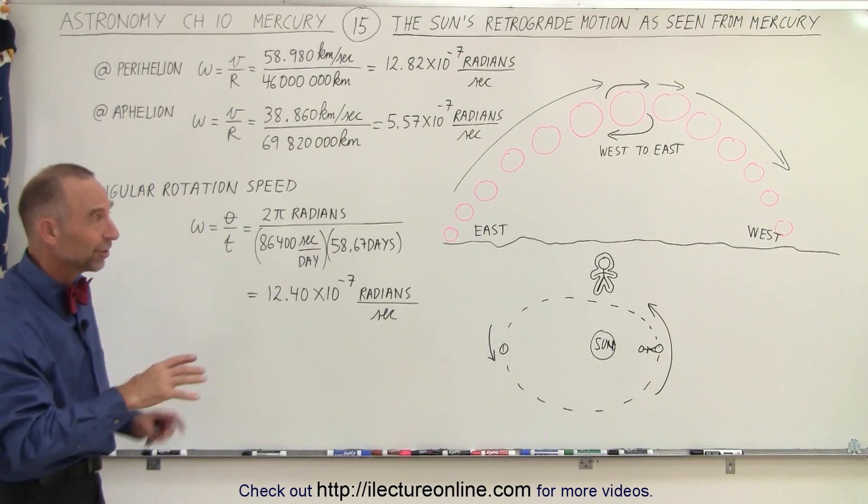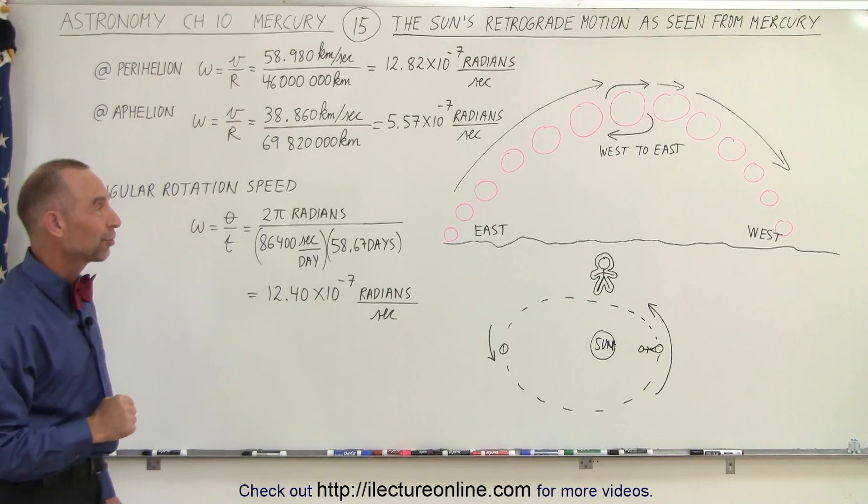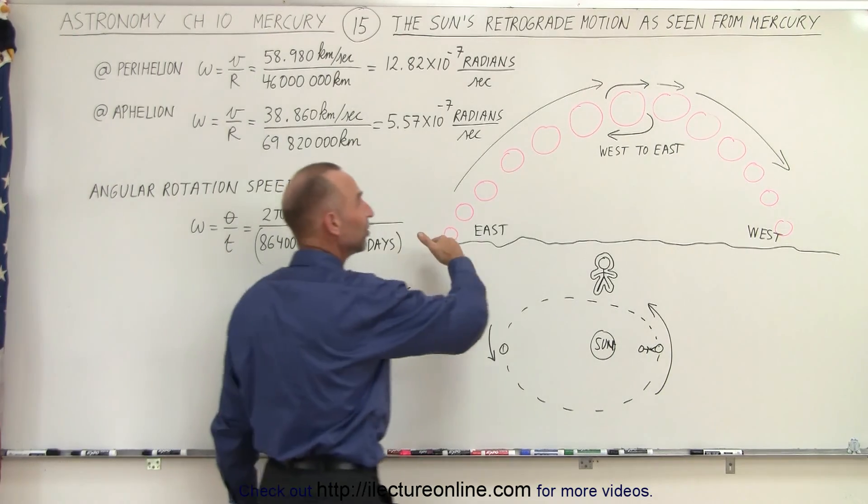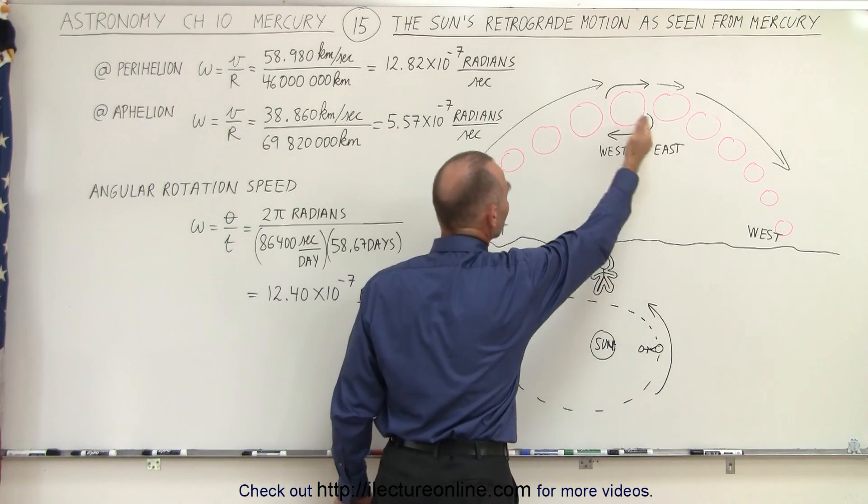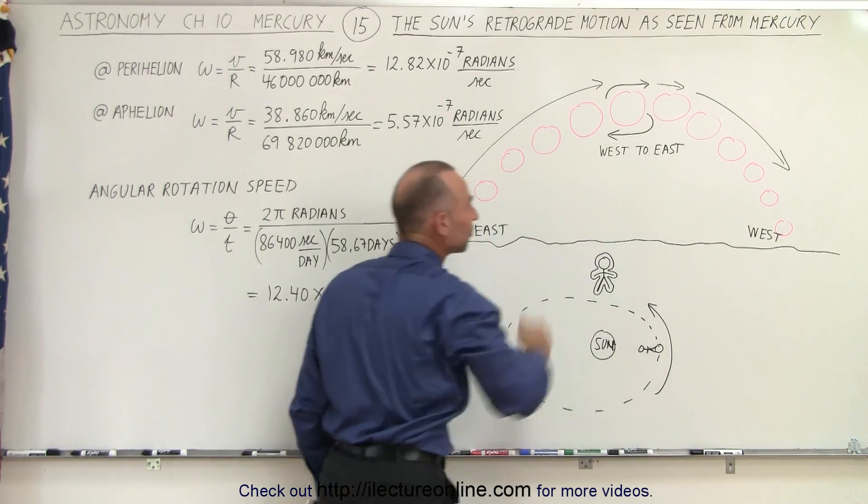You're going to see something different in the apparent motion of the Sun. But here where we see the Sun move in one direction, stop, in the other direction, stop, move back in the same direction as before, that's something we don't see in any other place in the solar system.